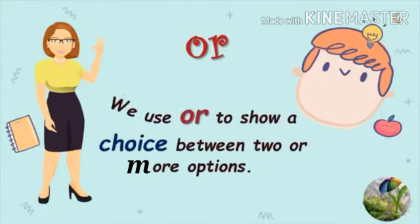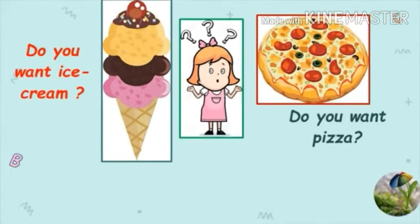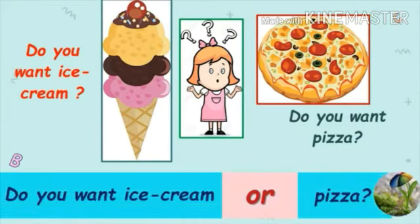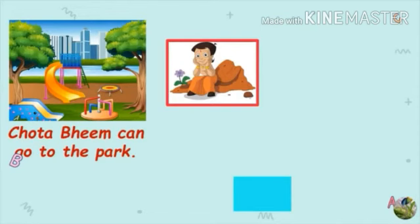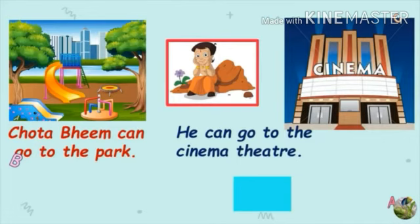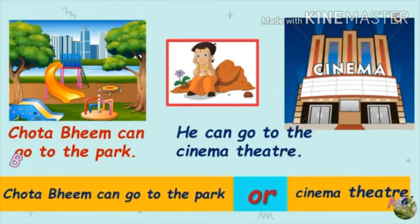Now we move on to the third conjunction, OR. We use OR to show a choice between two or more options. Here are some examples. Do you want ice cream? Do you want pizza? Here the choice is between ice cream and pizza. When we combine these two sentences, our answer would be: Do you want ice cream or pizza? Chota Vim can go to the park or he can go to the cinema theatre. The answer is: Chota Vim can go to the park or cinema theatre.